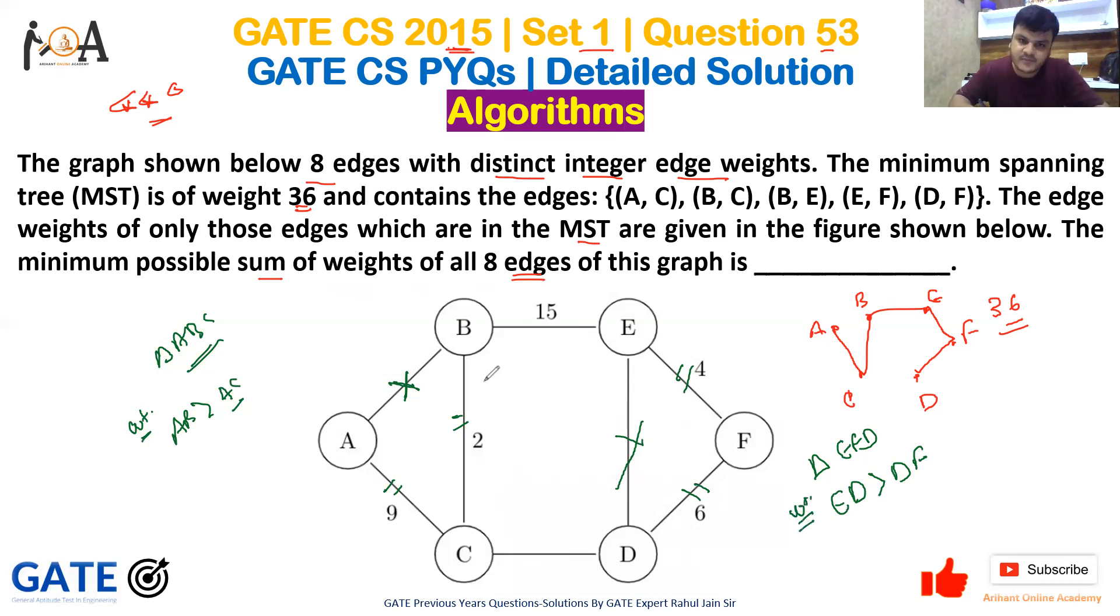Similarly, observe the complete rectangle. These edges are included, but C-D is left. If C-D is left, it means the weight of C-D is greater than the weight of B-E. Why? Because 2 is lesser, but 15 is a must, and we have included B-E which has weight 15.